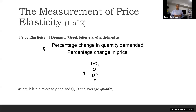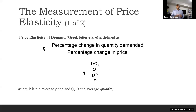That's how percentage change in quantity is calculated. Similarly, the percentage change in price is calculated as P1 minus P0, divided by P-bar, the average of P1 and P0.